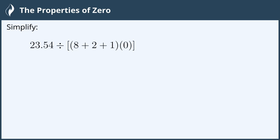Hi everyone! In this video, we will review the properties of zero. Simplify 23.54 divided by the quantity (8 + 2 + 1) times 0.